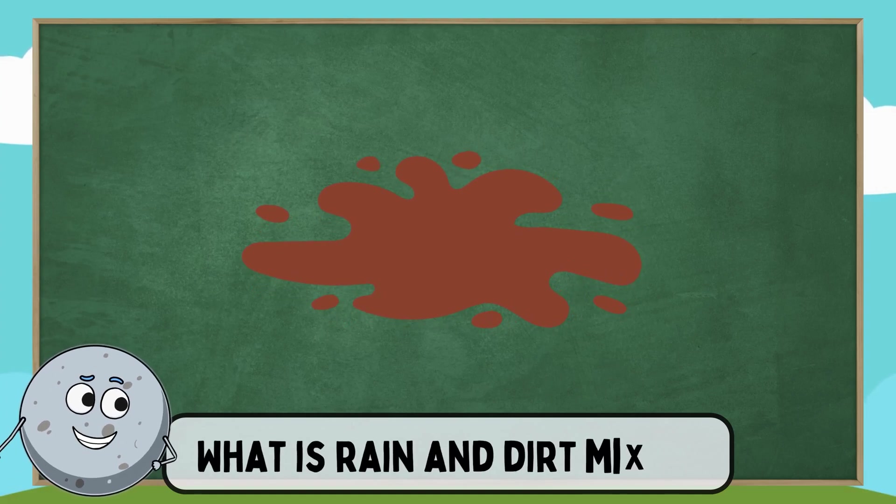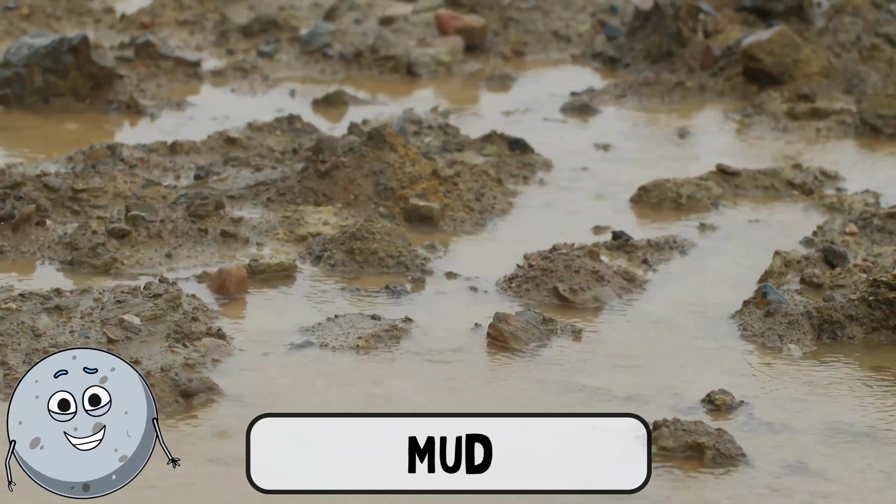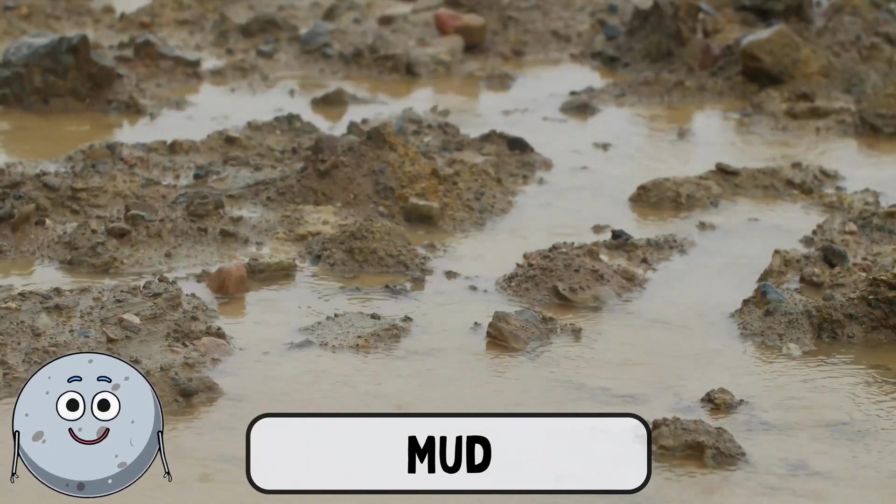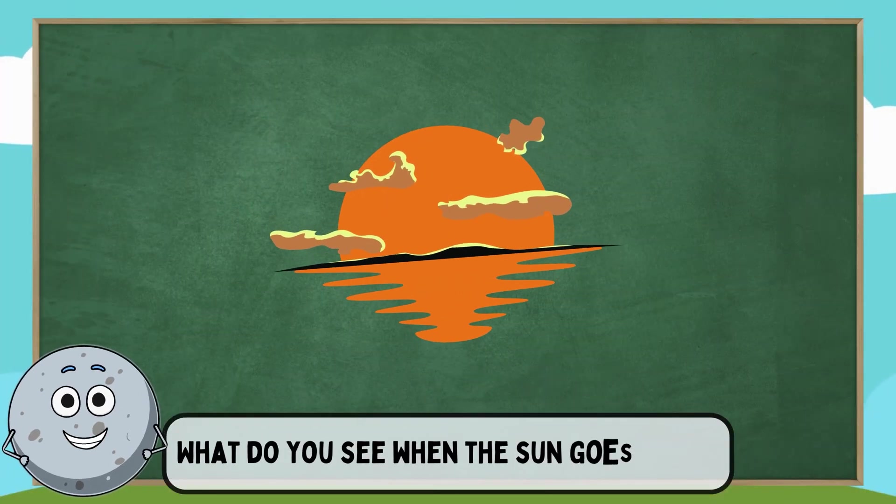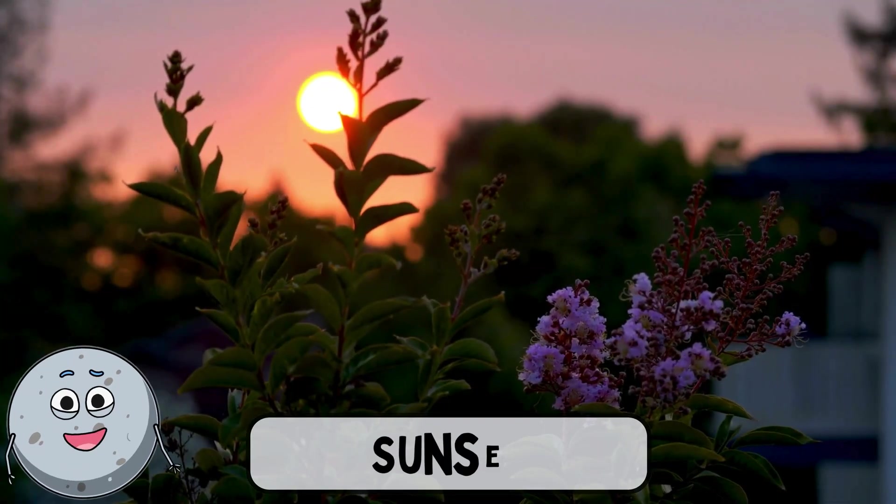What is rain and dirt mixed? Mud is made when rain mixes with dirt. What do you see when the sun goes down? I see a sunset.